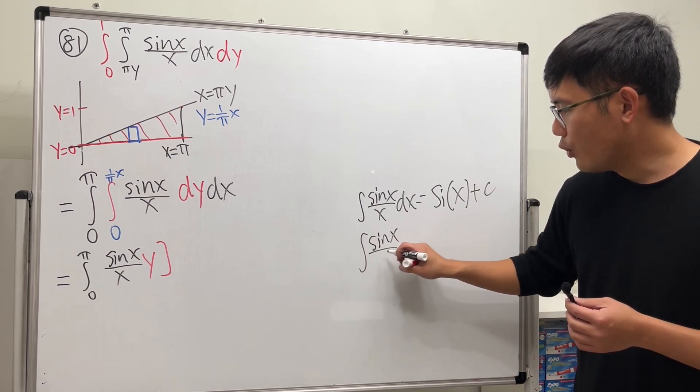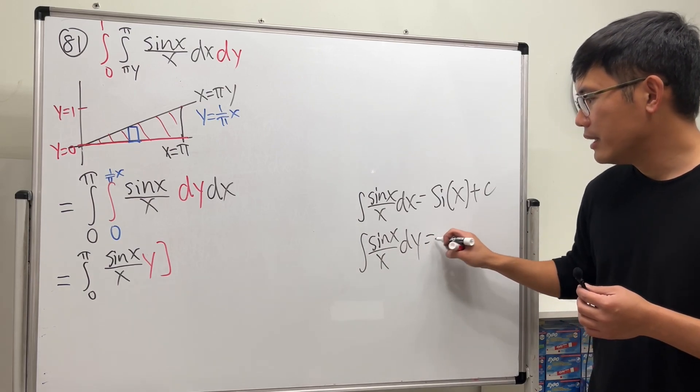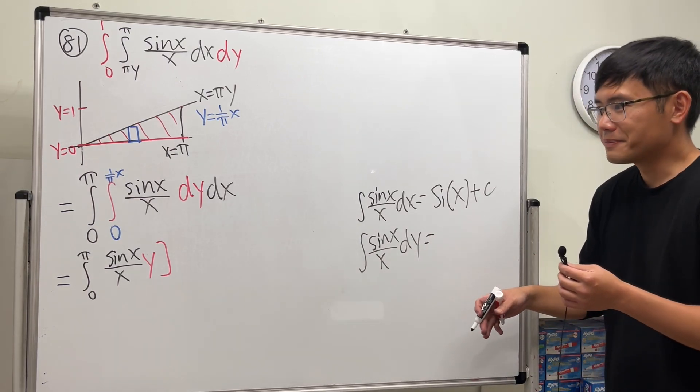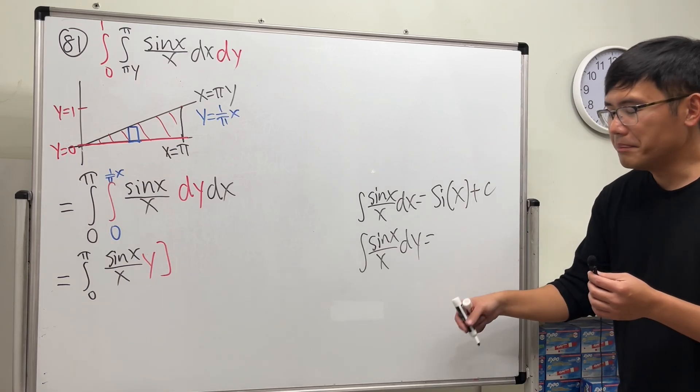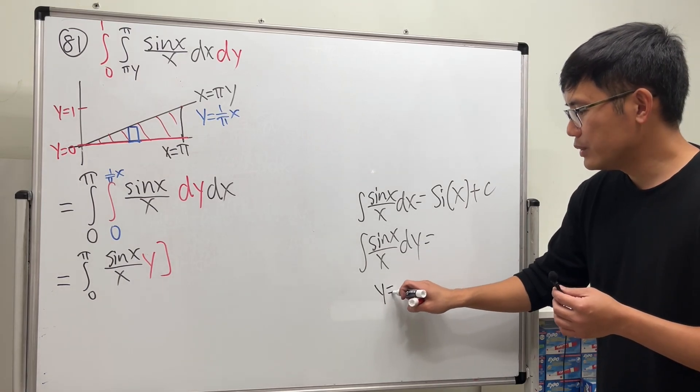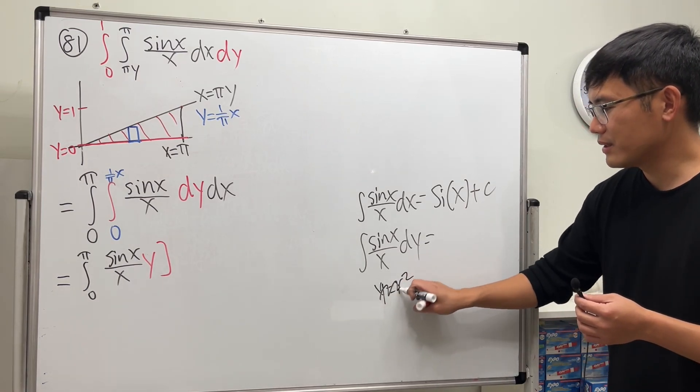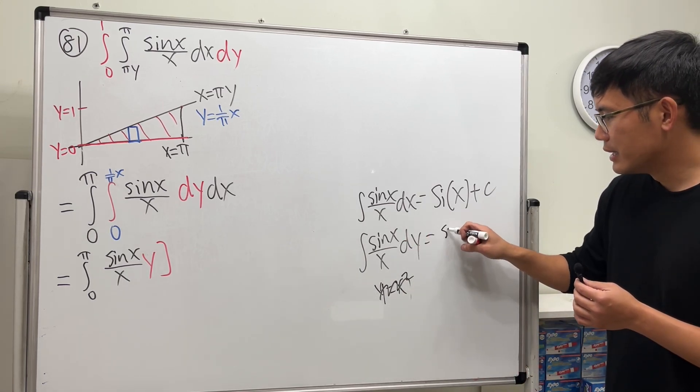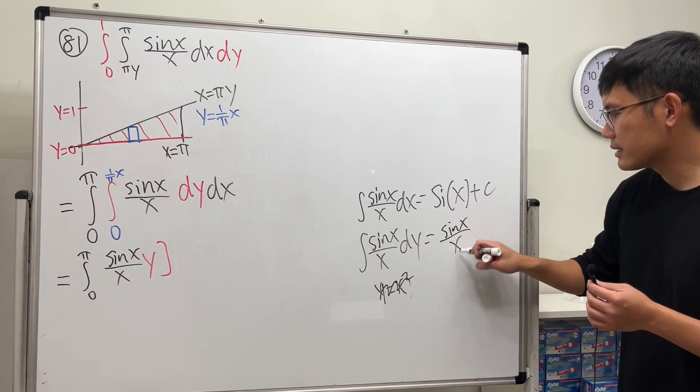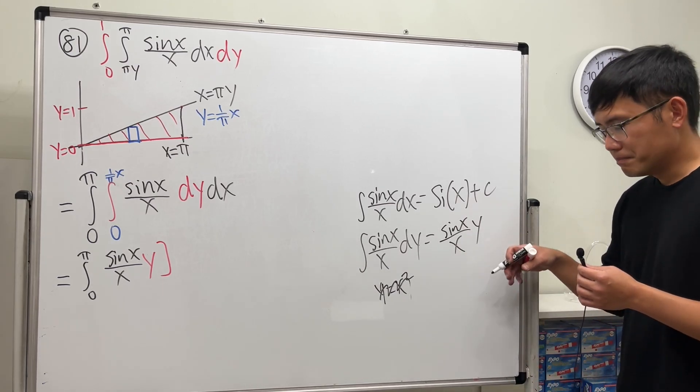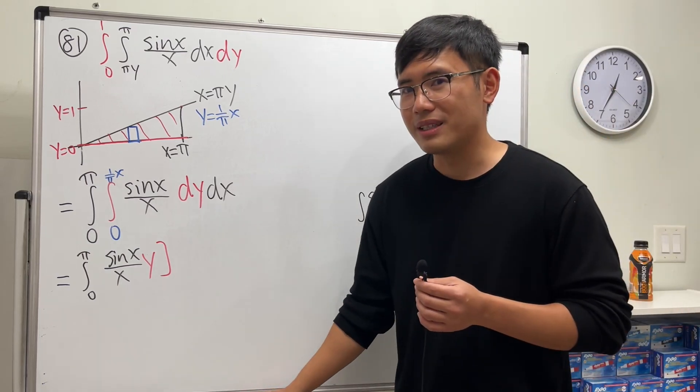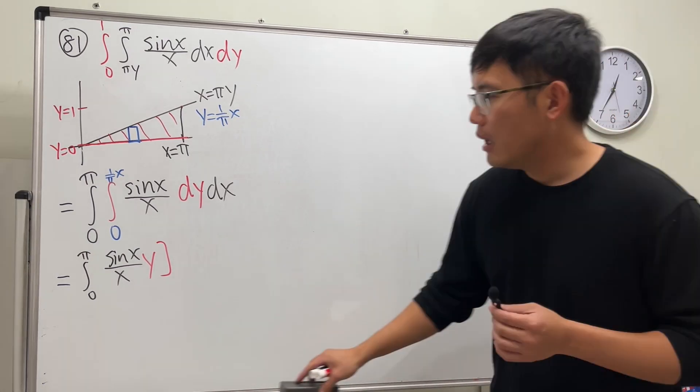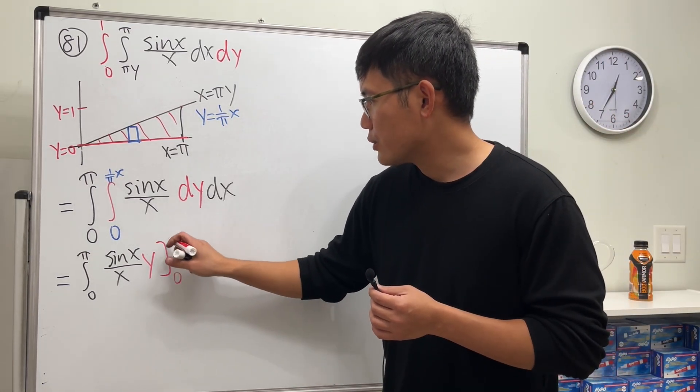Integral sin x over x dx, this right here is Si of x plus c. Integral, integral sin x over x, if you have dy, if there's no connection with x and y, meaning you don't say like y is equal to x squared or whatnot, none of this, you know, u substitution, no none of that. Then the integral of this is just sin x over x times y, plus maybe not constant because usually we deal with the definite integral in this situation. All right, and then we go from zero to one over π x, and then dx after that.